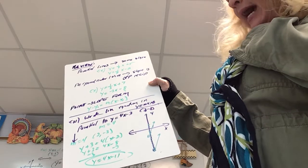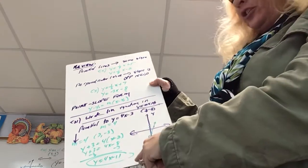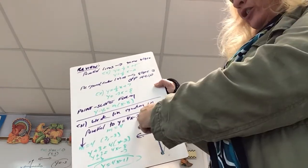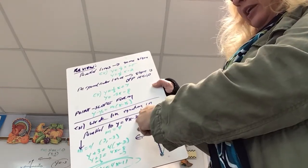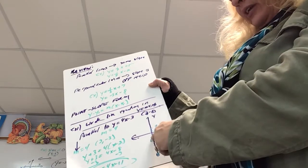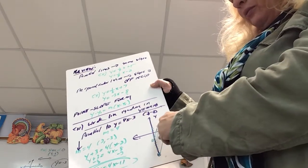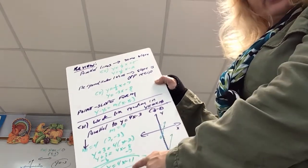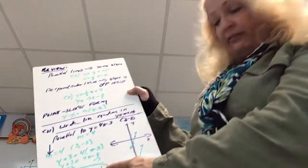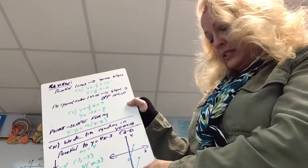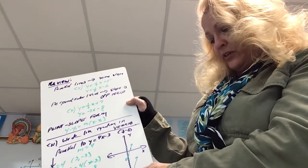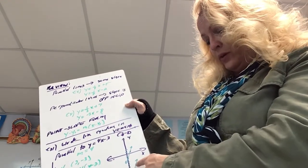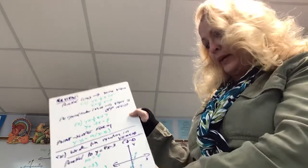I graphed these to prove it. Here's my original equation: y-intercept 0, negative 3, slope of 4. Here's the equation of the line I found — y-intercept at 0, negative 11, up 4, right 1. They are parallel.